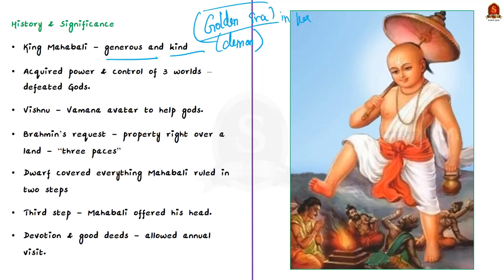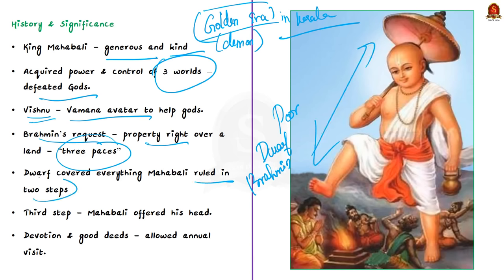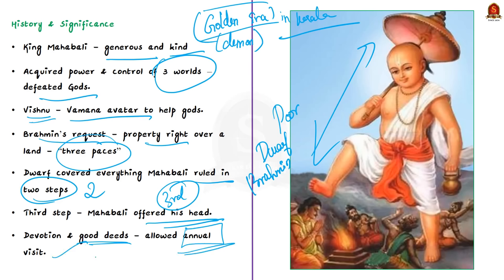According to Vaishnava mythology, Mahabali came to power by defeating the gods and taking over the three worlds. Gods asked Lord Vishnu for help, but Vishnu — not wanting to battle his own devotee — took the form of a poor dwarf brahmin, popularly known as the Vamana avatar, and visited Mahabali. The brahmin requested property rights over a piece of land measuring three paces, and Mahabali agreed. The dwarf suddenly grew in size and covered everything, ruling over Mahabali in just two steps. For the third step, Mahabali offered his own head. But impressed by Mahabali's devotion and good deeds, Vishnu allowed him to return to earth once a year — it is this annual visit that is celebrated as Onam.